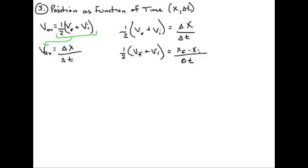If we bring the delta t up, if we multiply both sides by delta t, that means it'll come up to the left. So we're going to have one half vf plus vi times delta t equals x final, or displacement final, minus displacement initial.